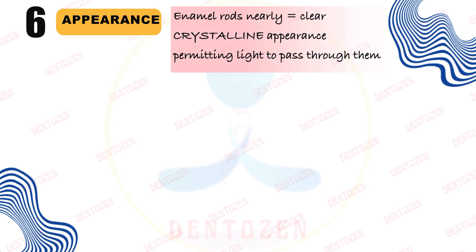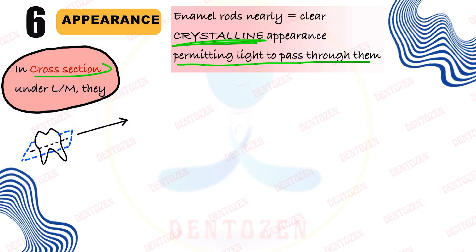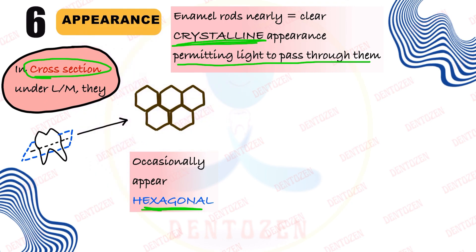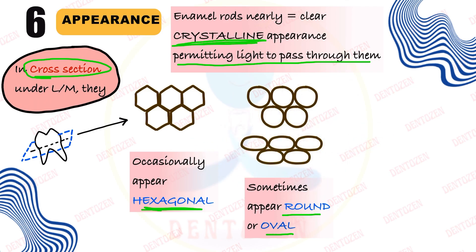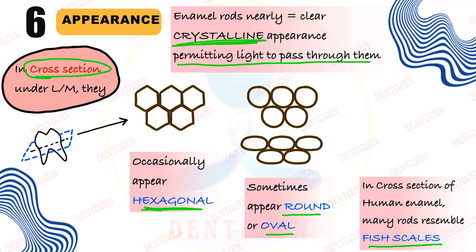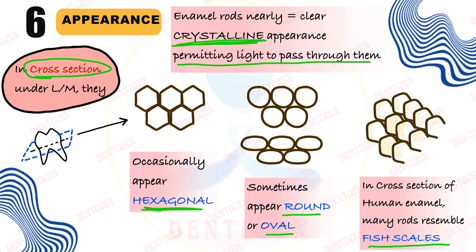Enamel rods give a clear crystalline appearance as they permit light to pass through them. Now in cross section, enamel rods can give different appearances. They can occasionally appear hexagonal, sometimes round or oval, and sometimes in the cross section of human enamel these rods can resemble the scales of a fish — giving a fish scale appearance.